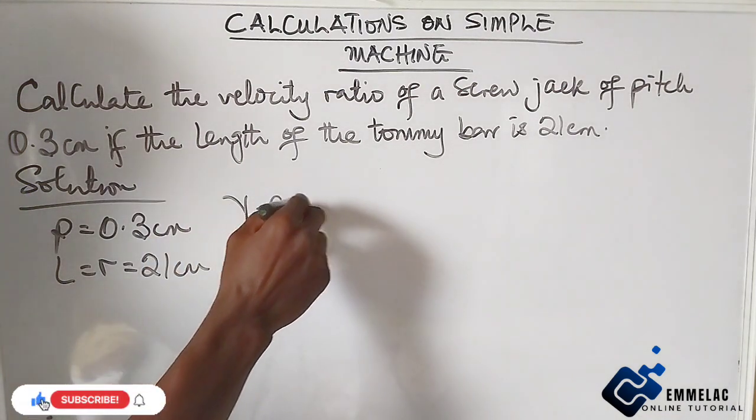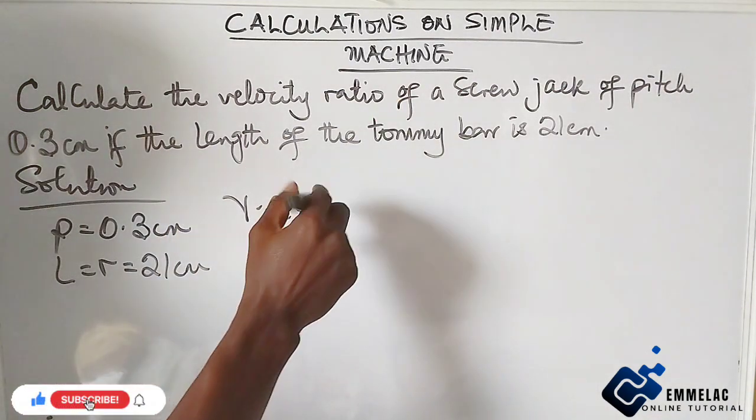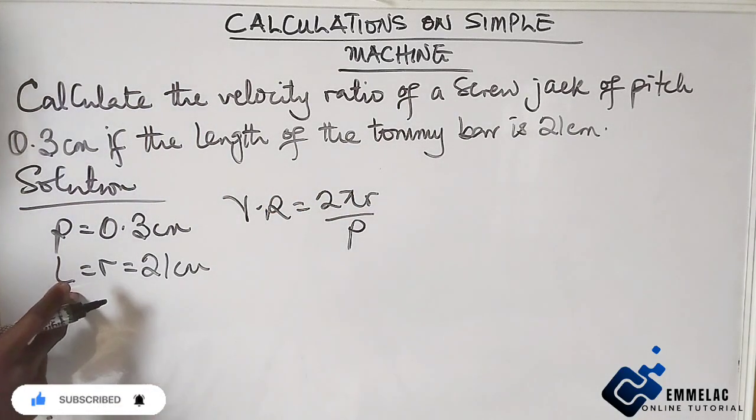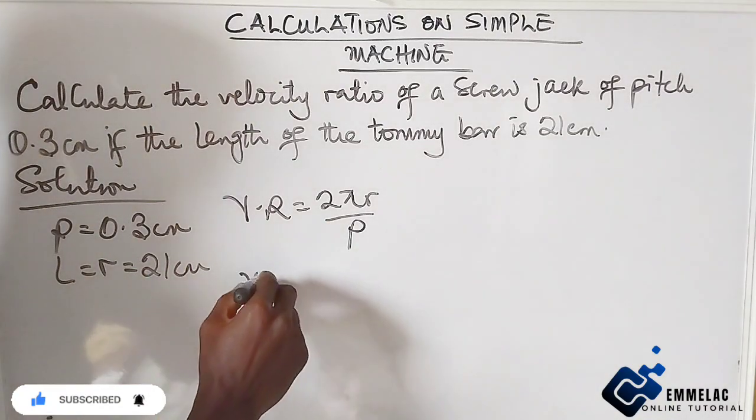Now the velocity ratio for screw jack is given as 2πr over P, where r is also the length.